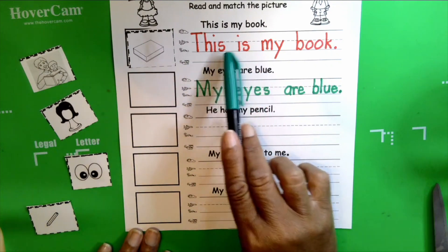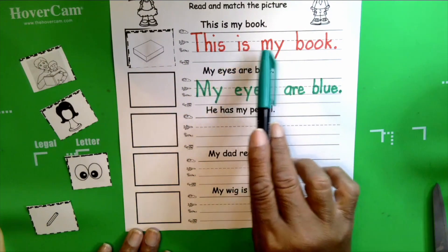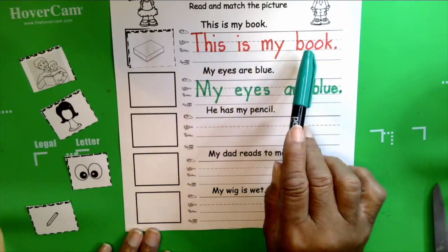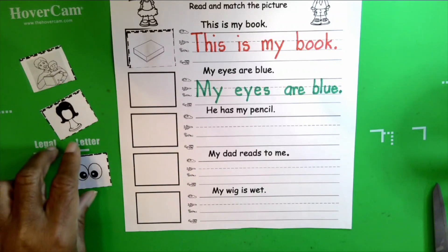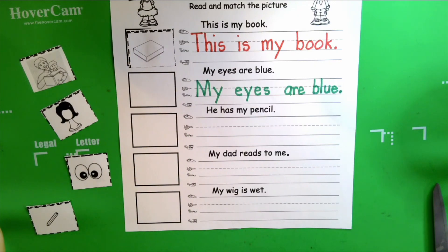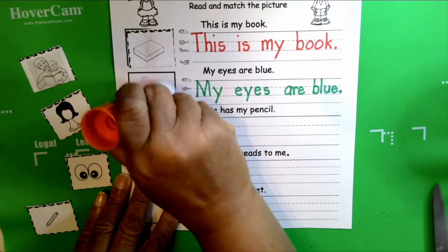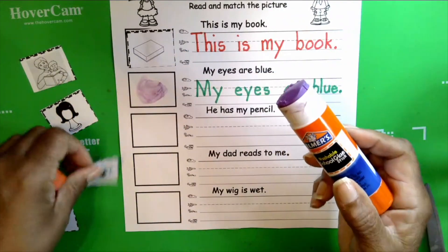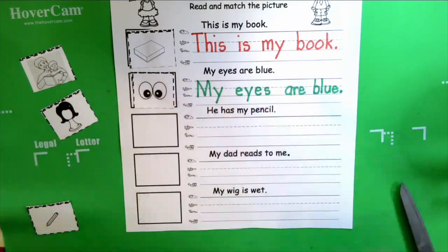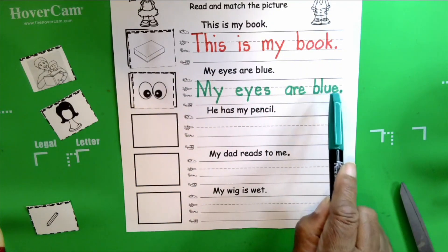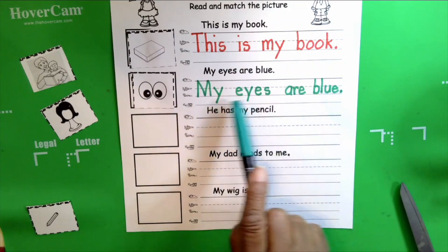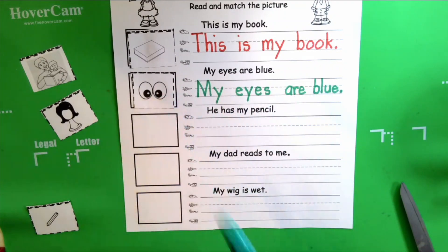Now we have to look for the eyes — can you find the eyes? You're going to need your glue stick. Swirl and glue. Put your picture there. And boys and girls, remember when we color the eyes, we need to color them blue, because in our sentence we said that my eyes are blue. So we must make sure we color the eyes blue.